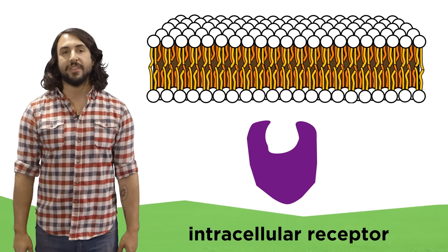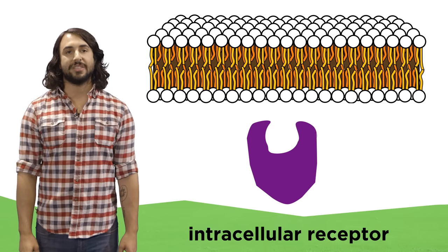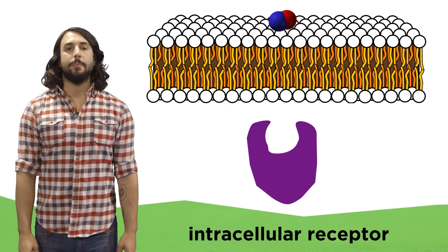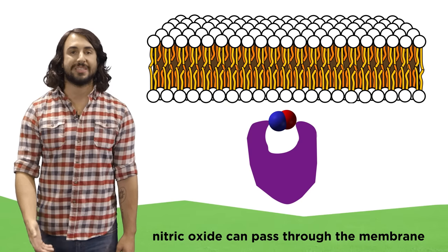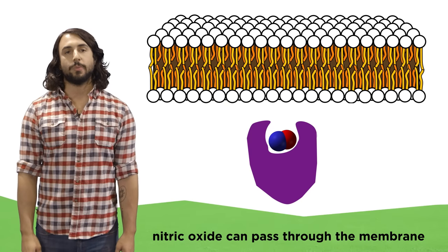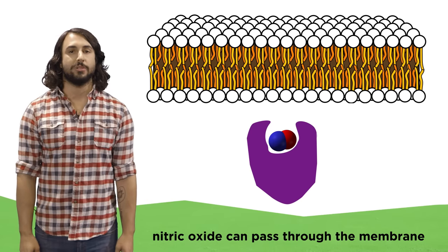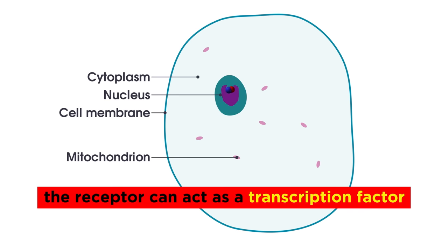Certain receptors are not found within the plasma membrane, but are instead inside the cell, either in the cytoplasm or in the nucleus. In these cases, the signaling molecule must be able to pass through the plasma membrane on its own in order to reach the receptor, which it can do if it is relatively small and nonpolar, like nitric oxide or certain hormones. Once an intracellular receptor is activated by its ligand, it might enter the nucleus and turn a gene on by acting as a transcription factor.